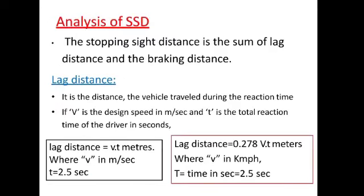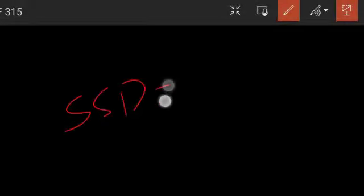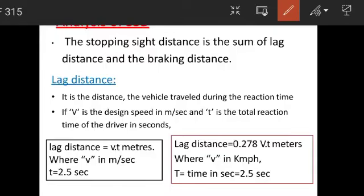Now, analysis of SSD. Stop sight distance is the sum of lag distance and braking distance: SSD = lag distance + braking distance. Lag distance is the distance traveled by the vehicle during the reaction time — the distance covered while the driver reacts but has not yet applied the brakes. That is the lag distance.